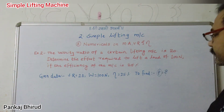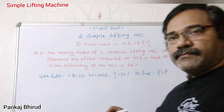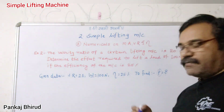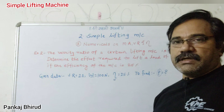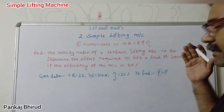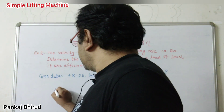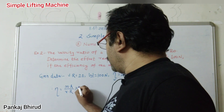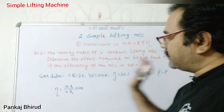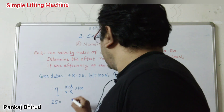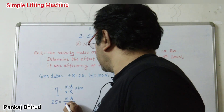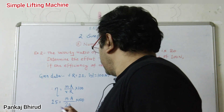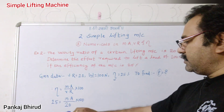For calculating P, we require MA, because W is given and MA = W upon P. Since we don't know MA, we use the efficiency formula: efficiency = MA upon VR into 100. Substituting: 25 = MA upon 20 into 100. Solving, MA = 25 into 20 upon 100 = 5.